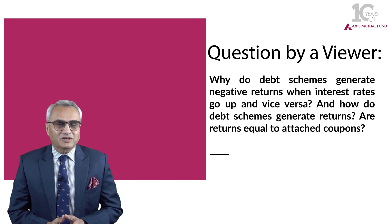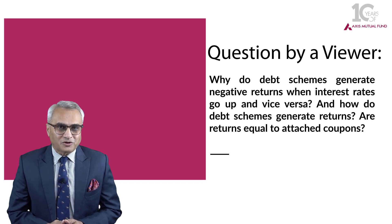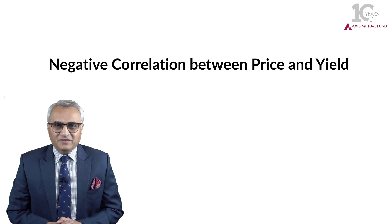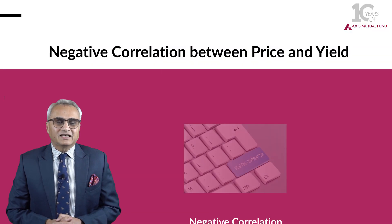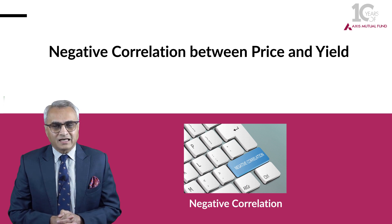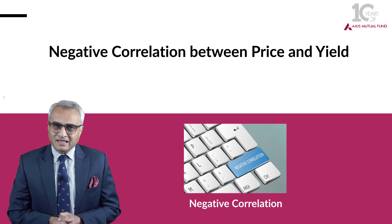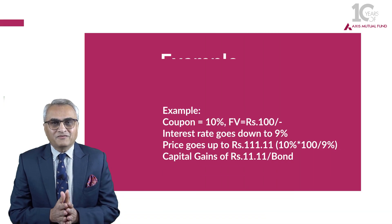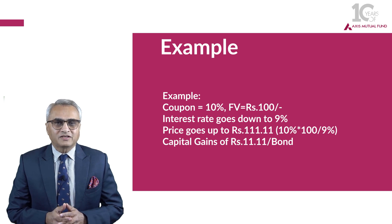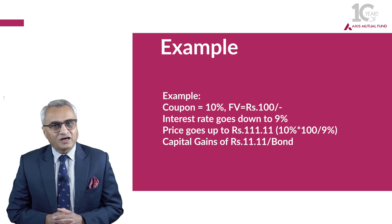How do debt schemes generate returns in the first place, and is return equal to the attached coupon? Not many investors are aware that there is a negative correlation between the price of a bond or the underlying debt security and interest rate movements. Let us understand this with an example. Assume you have invested in a debt security with a 10% coupon attached to it with a face value of 100 rupees.